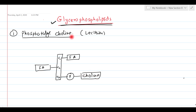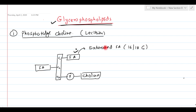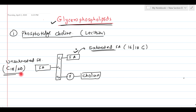The structure of lecithin or phosphatidylcholine is very simple. The fatty acid bound with the first carbon is most of the time a saturated fatty acid, 16 to 18 carbons long. The fatty acid bound with the second carbon is most of the time unsaturated, and most of the time 18 to 20 carbons long — slightly longer than the saturated fatty acid.